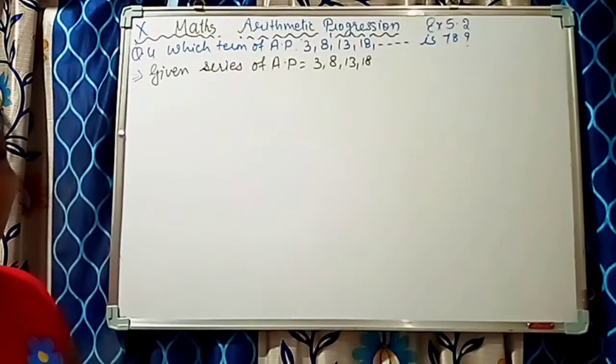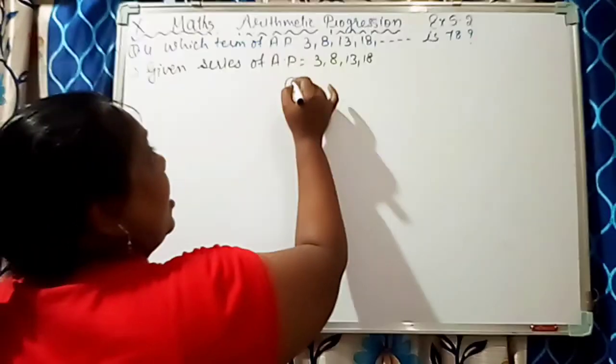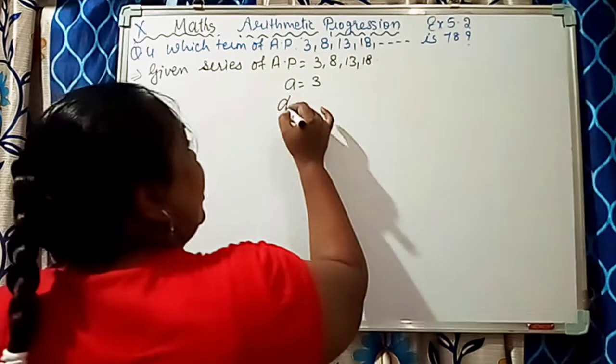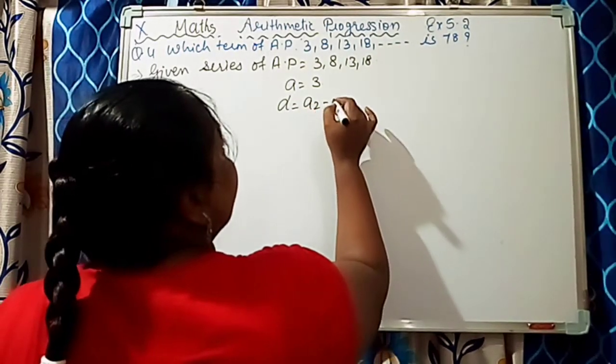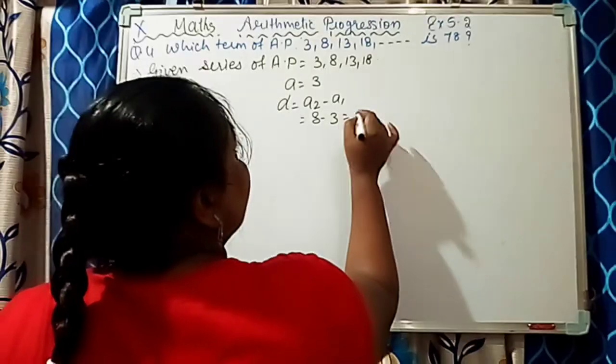As we know the formula, so here A is what? 3 is given. And D we have to find out. If we find out the D, D is equal to A2 minus A1, that is 8 minus 3, that is 5.